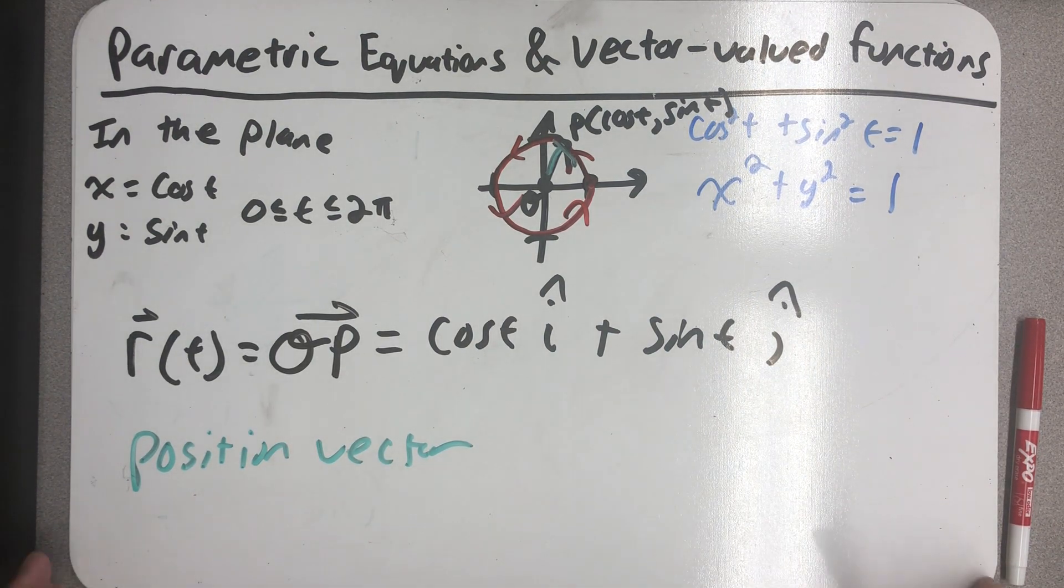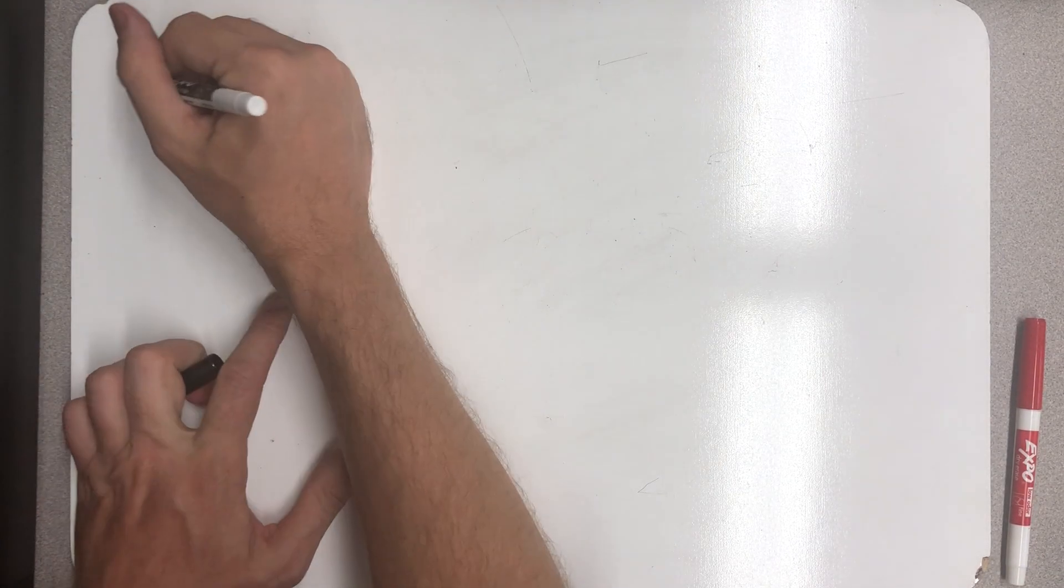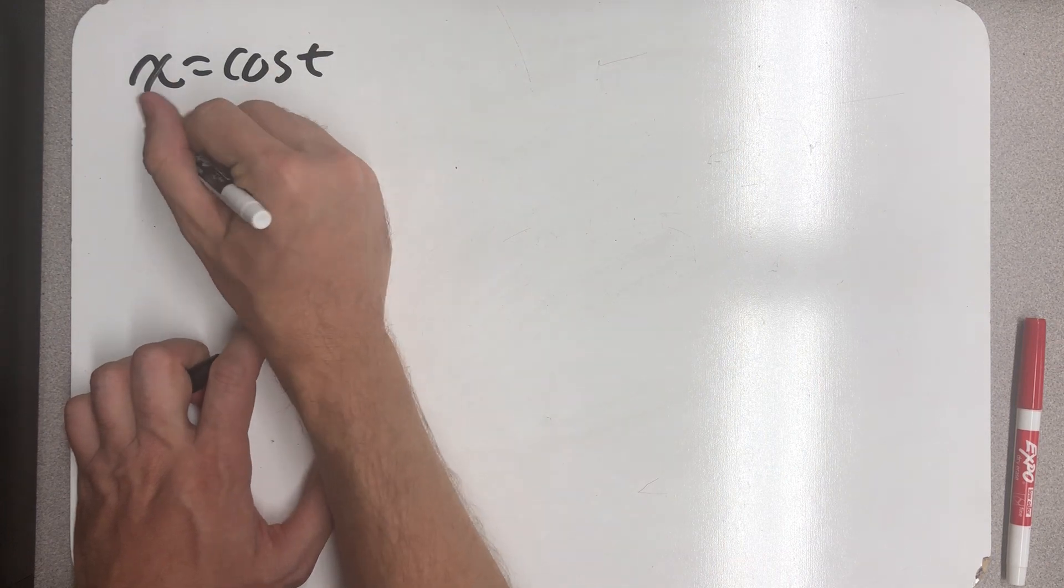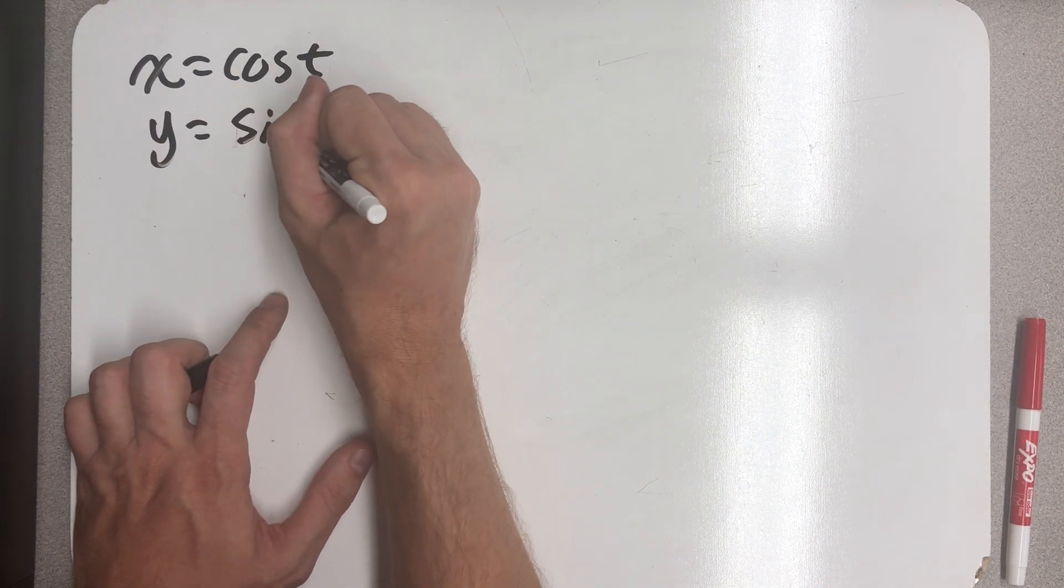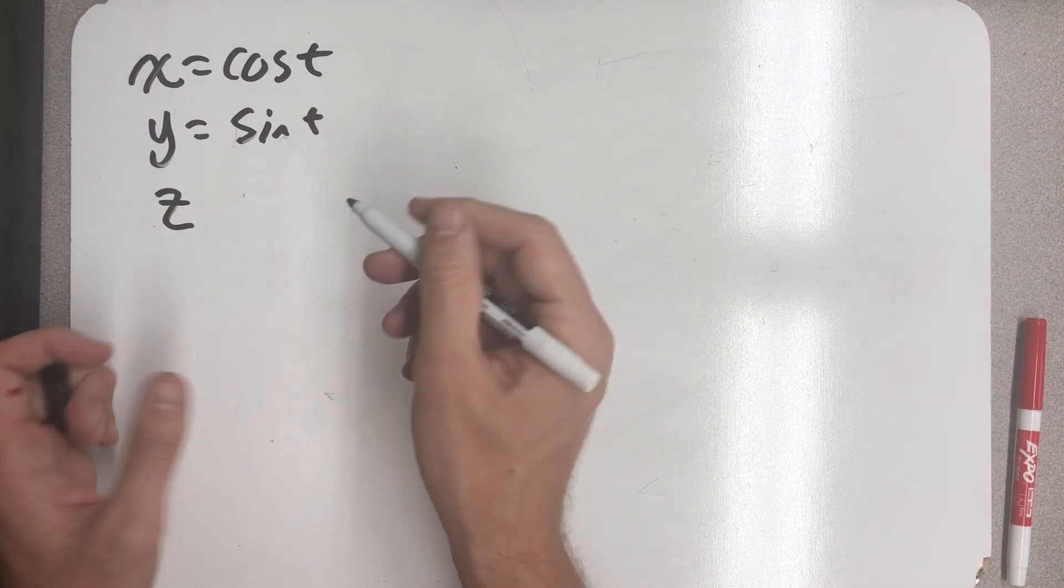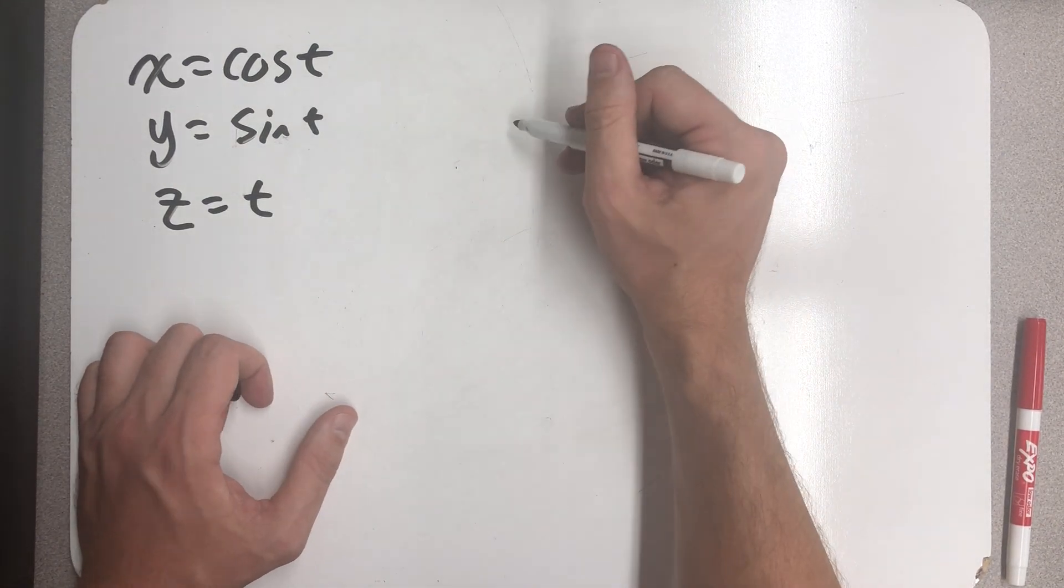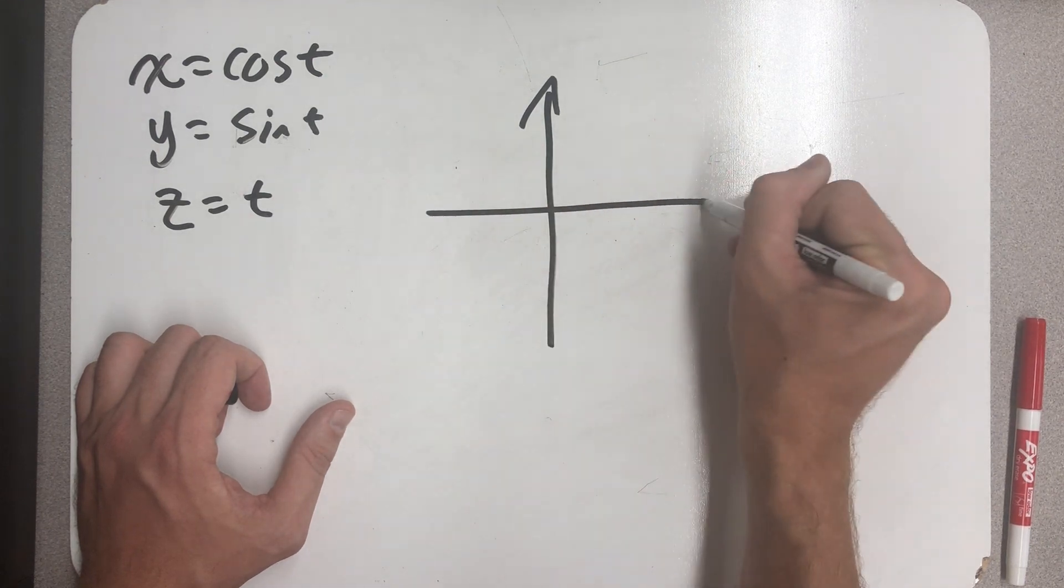So let's move this conversation to space. We'll start in a familiar place, letting x equal cosine and y equal sine of t. And let's let z equal t. We can start in a familiar right-handed coordinate system.